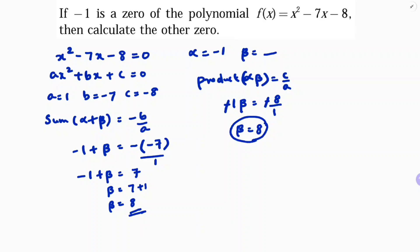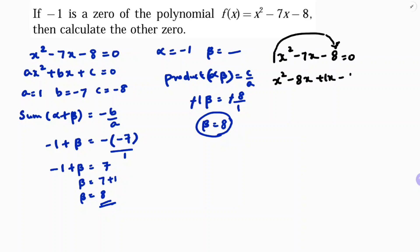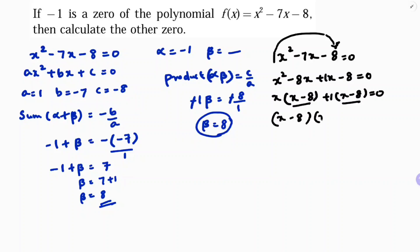Now by factorizing, splitting the middle term: x² - 7x - 8. Since 1 × 8 = 8 and 8 - 1 = 7, rewrite as x² - 8x + x - 8 = 0. Taking x common: x(x - 8) + 1(x - 8) = 0, so (x - 8)(x + 1) = 0. Therefore x = 8 or x = -1. Since -1 is already given, the other zero is 8.